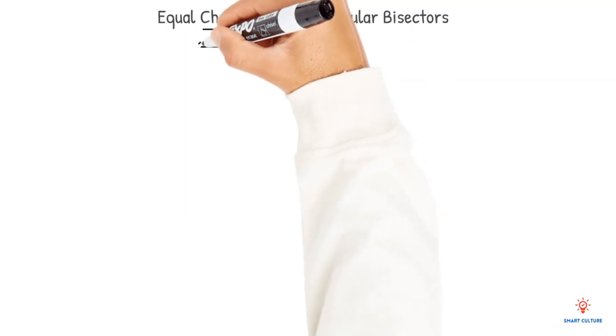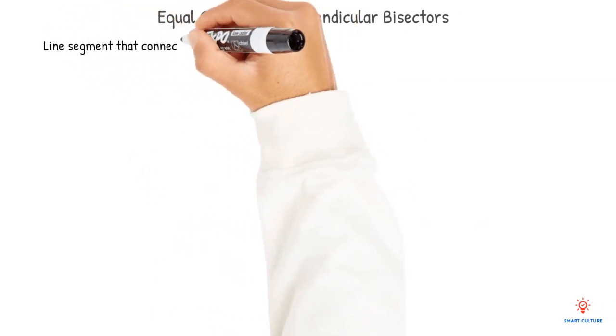A chord is a line segment that connects two points on a circle.